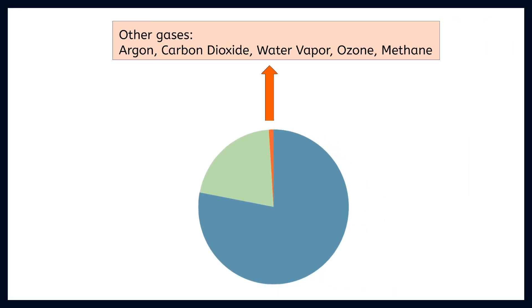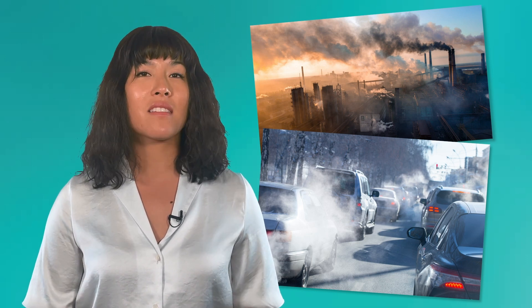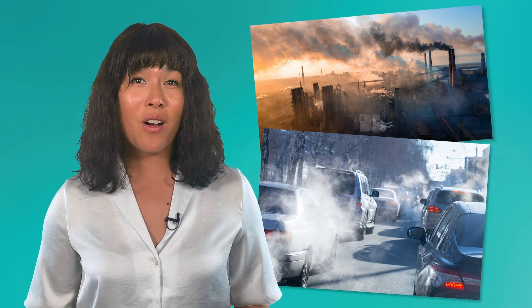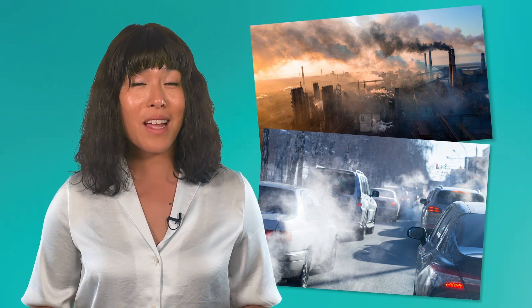Finally, we have some other gases mixed in, like methane and ozone. These are sometimes called greenhouse gases. Like water vapor, these greenhouse gases help keep the temperature on Earth warm enough for us to live. We hear about these greenhouse gases a lot when we discuss climate change. These gases are necessary in small amounts, but human activities can release extra greenhouse gases into the atmosphere. When the balance of these gases gets thrown off, it can cause big problems. We'll keep an eye out for some of these big problems later in this course.